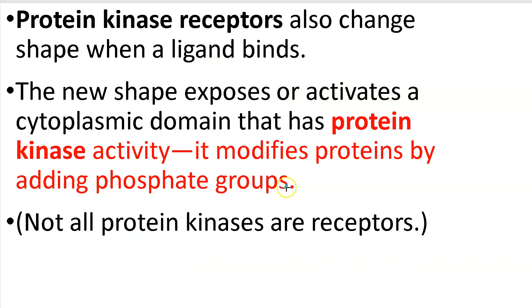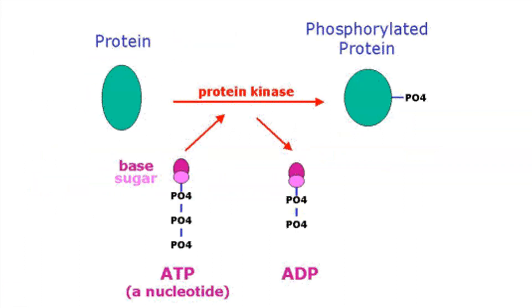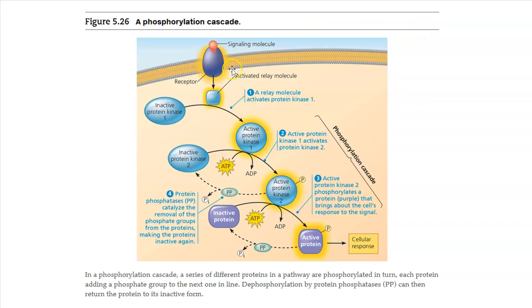Protein kinase, I do want you to know the definition of protein kinase because it modifies proteins, again, form leads to function, by adding phosphate groups. So not all protein kinases are receptors, little footnote there, but protein kinase receptors also change shape. So again, form leads to function. I keep saying it, but here's an example. This is very pixelated, but you can see ATP to ADP. We're losing the phosphate. Now we have a phosphorylated protein. So an example here from a different book is you have your signaling molecule and then activate relay molecule, and that relay molecule activates the protein kinase, and then that protein kinase is activated, and that protein kinase is activated, and that's the goal. We're trying to get a cellular response right there. So that's called a phosphorylation cascade. A series of different proteins in a pathway are phosphorylated, which means adding a phosphate in turn. So each protein adding a phosphate group to the next one in line.